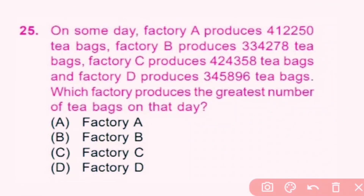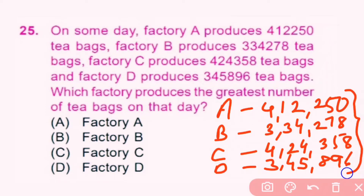Question number 25. On some day, Factory A produces 4,12,250 tea bags. Factory B produces 3,34,278 tea bags. Factory C produces 4,24,358 tea bags. Factory D produces 3,45,896 tea bags. Comparing all factories, Factory C produces the most tea bags. C is the correct answer.